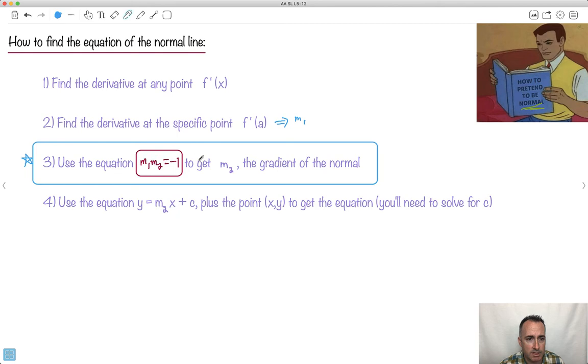There's very little to memorize, but maybe this is something good to memorize here. This is the extra step. Okay, this one right here. This is the new step here. So what are we going to do? We're going to use m1·m2 to get m2, which is the gradient of the normal. Because what we just did, we just found the gradient of the tangent. That's what this is.